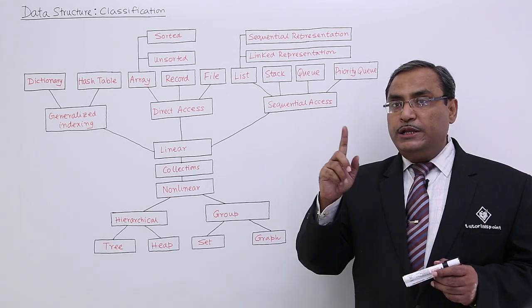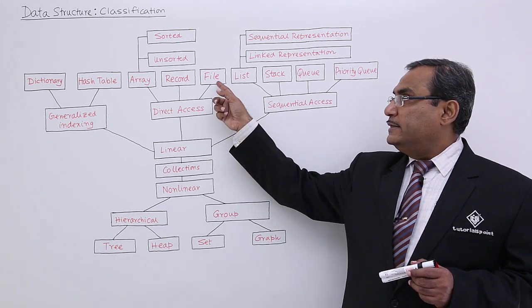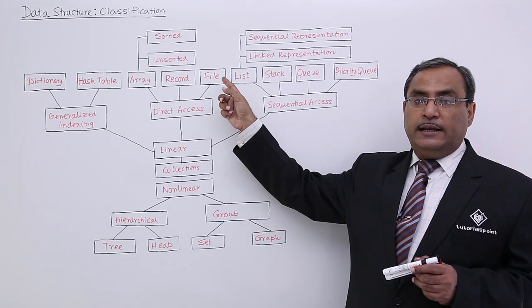Then my pointer will reach the start of the nth record. In this way, direct accessing can be done in case of files.